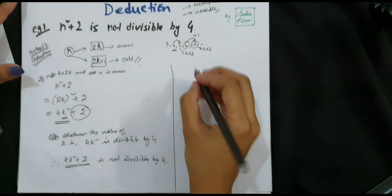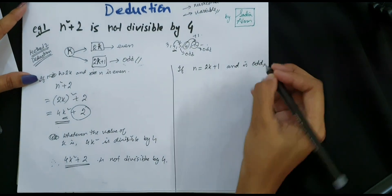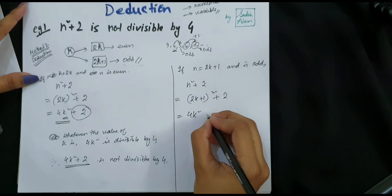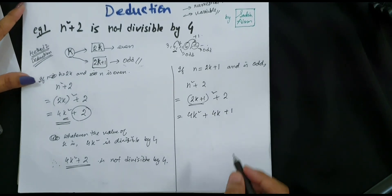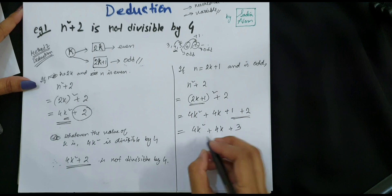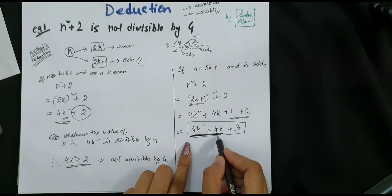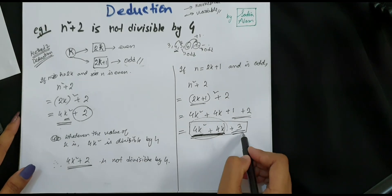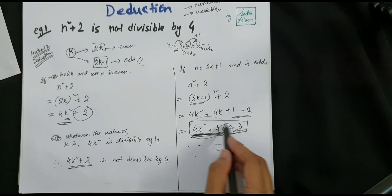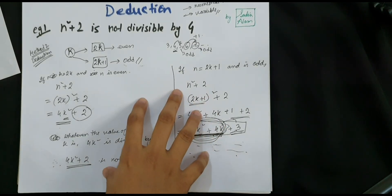Similarly we do this for odd values. If n equals 2k plus 1 and n is odd, then n squared plus 2 becomes (2k plus 1) squared plus 2. Expanding using the (a+b)² formula gives 4k squared plus 4k plus 1 plus 2, which results in 4k squared plus 4k plus 3. The term 4k squared plus 4k is a multiple of 4, but adding plus 3 will result in something not divisible by 4.